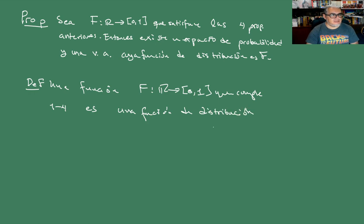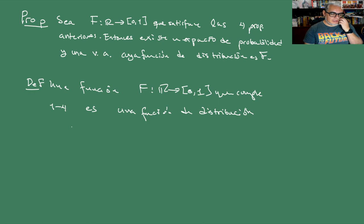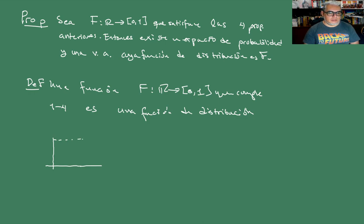No hay que conocer alguna variable aleatoria para la cual funciona como distribución. Hay muchas funciones que podemos construir a partir de esta idea. Queremos que cuando crezca mucho se quede atorada en 1, y cuando decrezca mucho se quede atorada en 0. Por ejemplo, una función de escalones así.